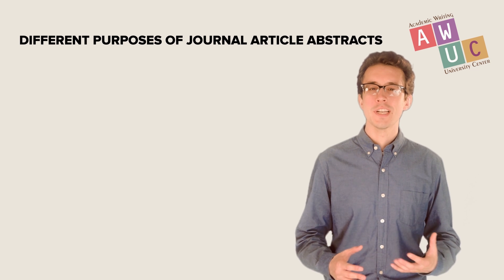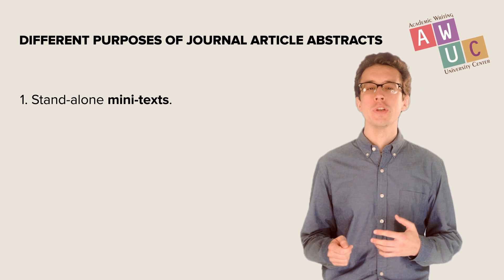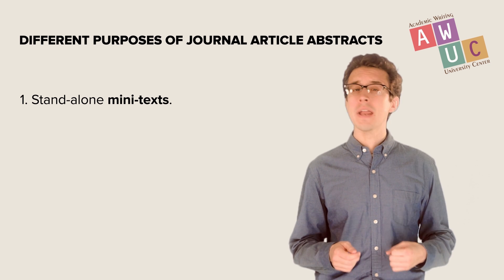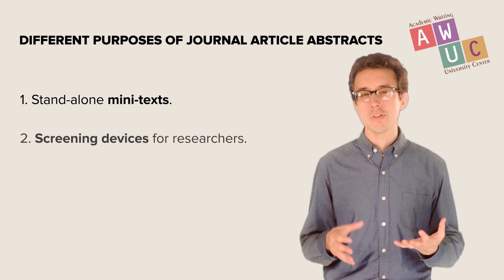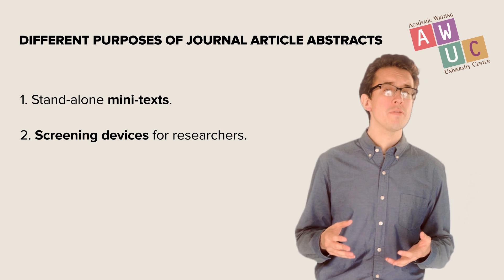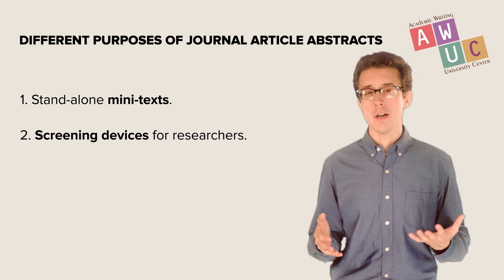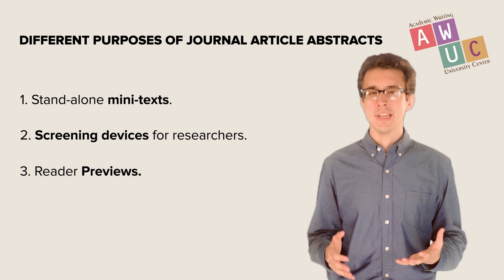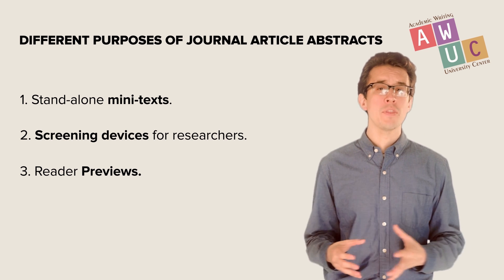First, they function as stand-alone mini-texts. This means that journal abstracts are often used to give readers a short summary of the topic of a research study, including its methodology and its main results. Journal abstracts also function as screening devices — they provide readers with a brief synopsis of the important information from an article and help them to decide whether to read the whole article or not. They can also function as previews for readers intending to read the whole article, giving the reader a roadmap to help guide the reading.